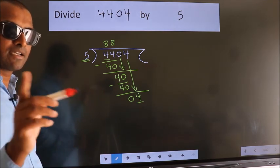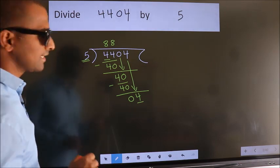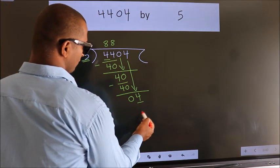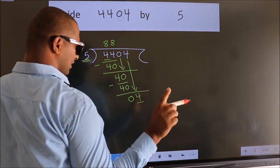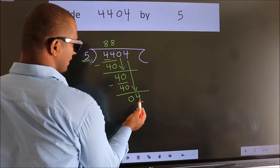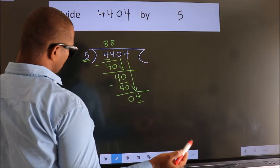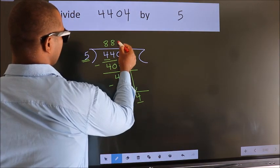Instead of that, what we should think of is which number should we write here. If I take 1, we get 5. But 5 is larger than 4. So what we do is, we take 0 here.